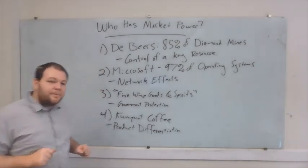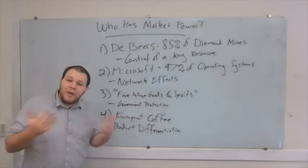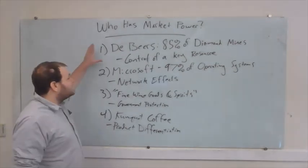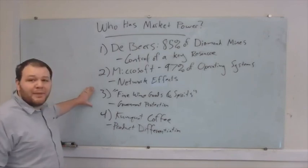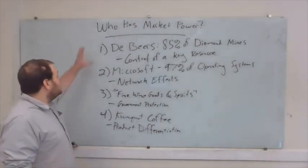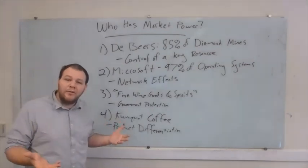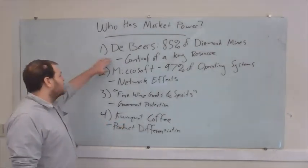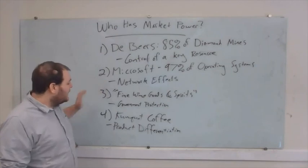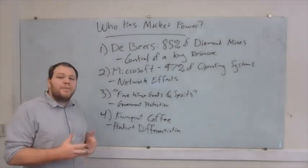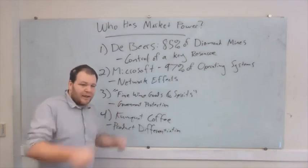So what's the main point? If you want to have market power, you're going to have to have some ability to distinguish yourself from your competitors — some reason that you can produce a product that no one else can produce. That can come from control of a resource, network effects, or economies of scale. It can also come just from the fact that you have a unique and differentiated product.